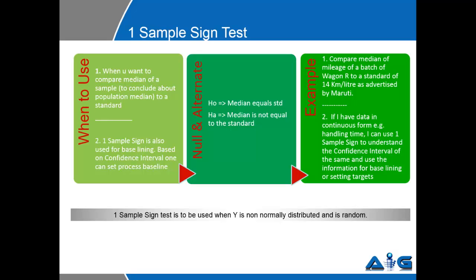Depending on the p-value, we decide whether it is the null hypothesis or alternate hypothesis. Null meaning that the median equals the standard, and in alternate, the median is not equal to the standard. One Sample Sign test is to be used when Y is non-normally distributed and data is random.